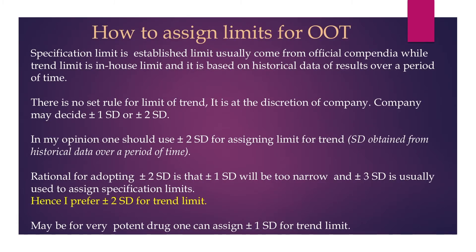How do we assign limits for out of trend? Specification limits usually come from official compendia, while trend limits are in-house limits based on historical data over a period of time. There is no set standard tool for trend limits — it is at the discretion of the company. The company may decide on plus or minus one standard deviation or plus or minus two standard deviations. In my opinion, one should use plus or minus two standard deviations for trend limits, as plus or minus one would be too narrow and plus or minus three standard deviations is typically used to assign the specification limit.